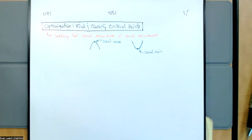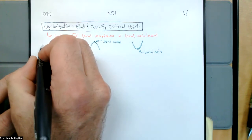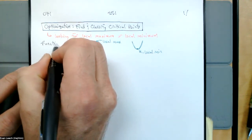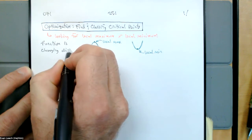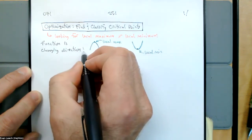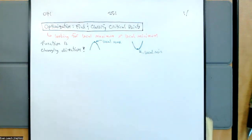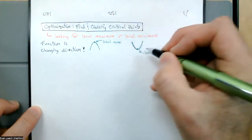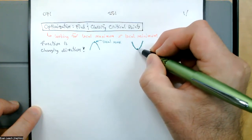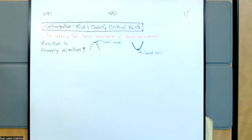So we're looking for a change in direction — a point where the function is changing direction. We want to find a local maximum or a local minimum. If it changes from increasing to decreasing, that's a local maximum. If it's changing from decreasing to increasing, that is a local minimum.